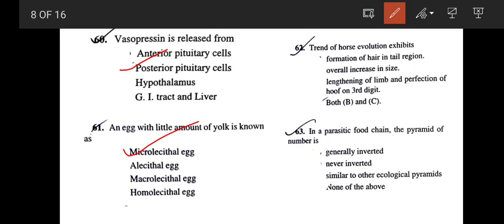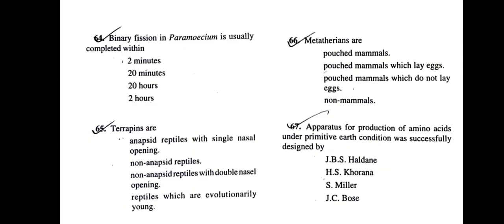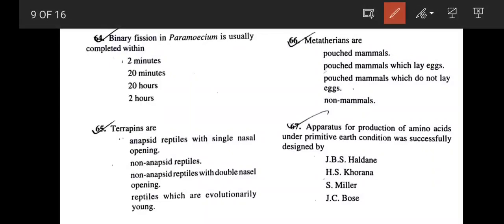Next: Trend of horse evolution exhibits formation of hair in tail region, overall increase in size, lengthening of limb and perfection of hoof in third digit. Obviously, as we have already discussed many times, there is a tendency to increase in size. And obviously, the third digit lengthens and acquires the hoof. So option C is also correct. Correct answer would be both B and C. Next: In a parasitic food chain, the pyramid of number is generally inverted. Obviously, it is generally inverted. Next: Binary fission of Paramecium is usually completed within? This is a very informative type question. If you know you can answer, if you don't know you can't answer. The correct answer is two hours.